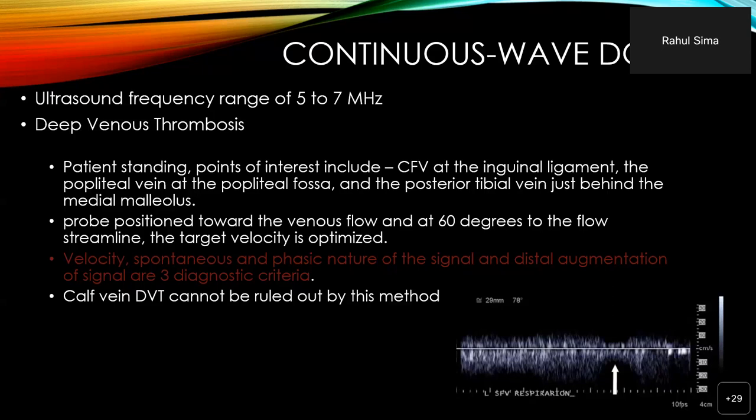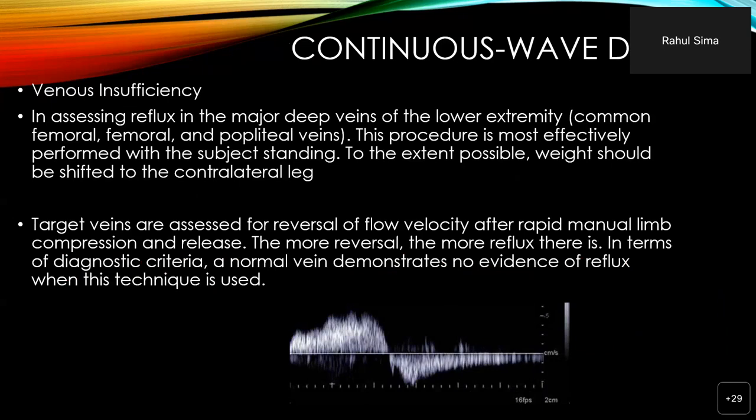Calf DVT cannot be ruled out by this method. When assessing reflux of the major veins of the lower extremity, the procedure is most effectively performed with the subject standing and weight shifted to the contralateral limb. Target veins are assessed for reversal of flow by checking velocity after rapid manual limb compression and release. The more the reversal, the more the reflux. A normal vein demonstrates no evidence of reflux when this technique is used.